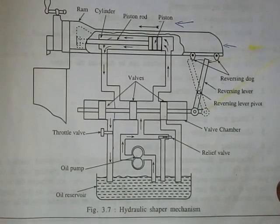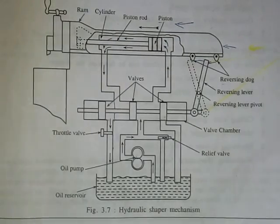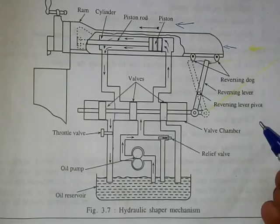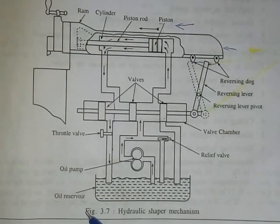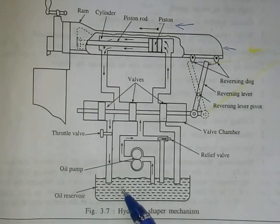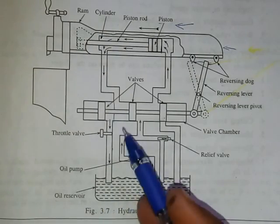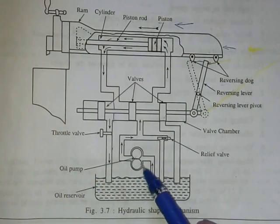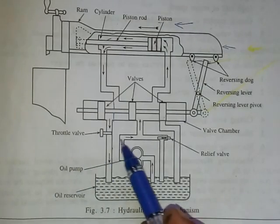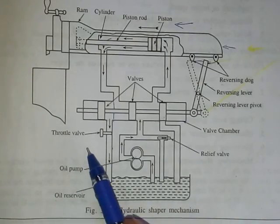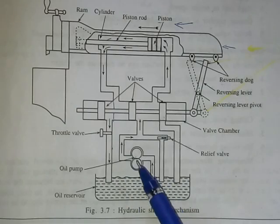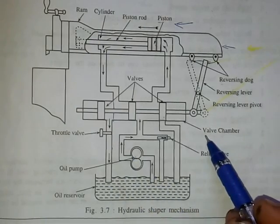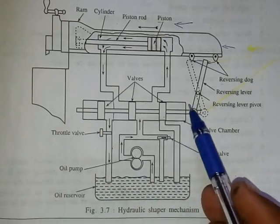Hello friends, today I am going to explain the hydraulic shaper mechanism. Let us start with the construction. The hydraulic shaper consists of an oil reservoir where oil is stored, an oil pump which is used to pump the oil from the reservoir to the working zone, and a throttle valve to control the flow of oil.